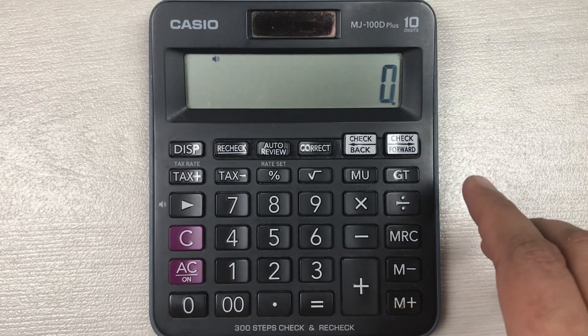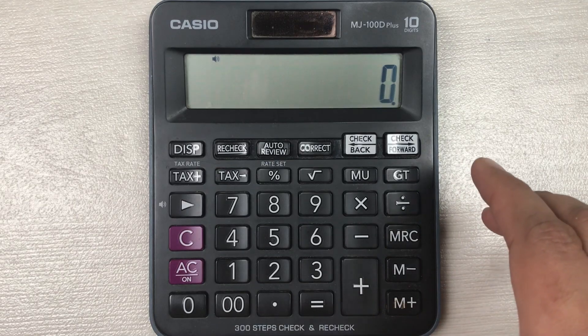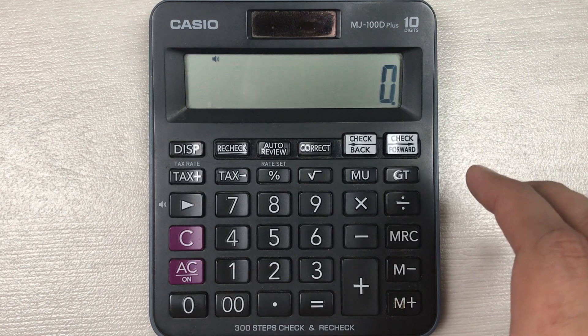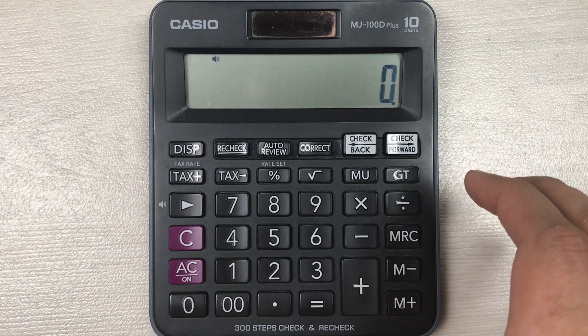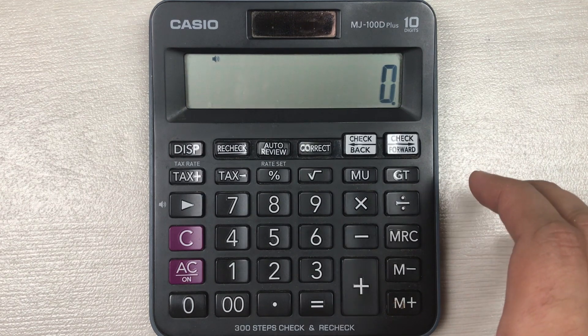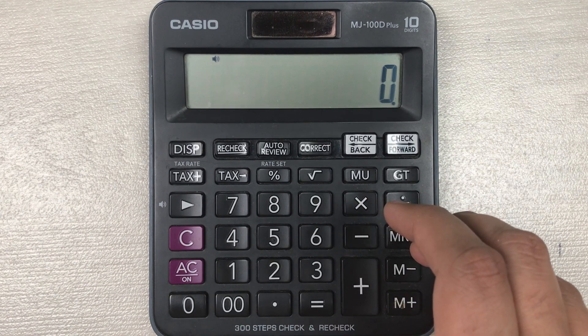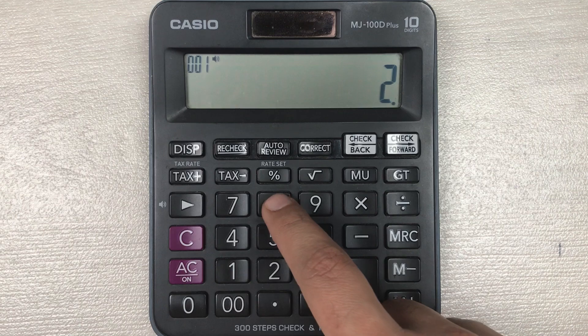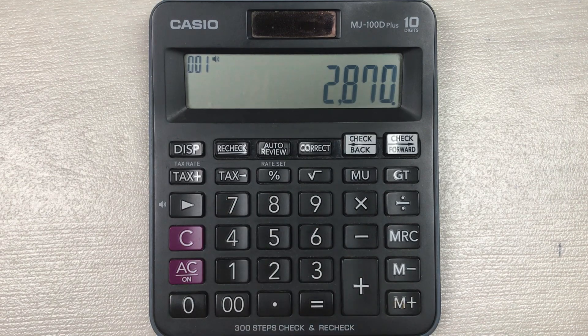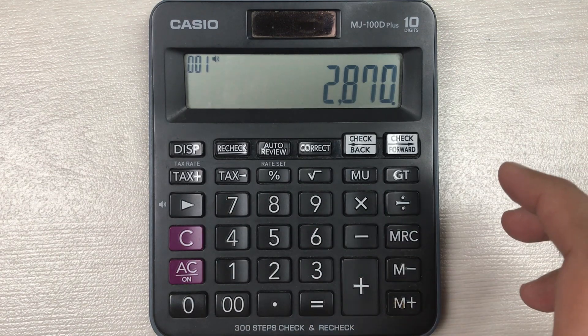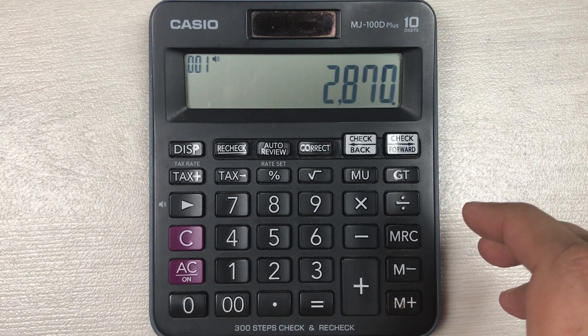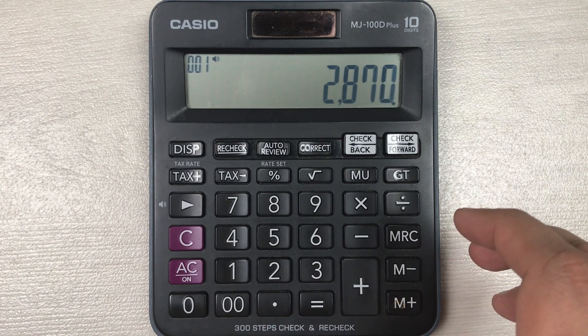Hello guys, I hope you are doing really well. In today's video I'm going to show you how to calculate 40 percent of a price on your calculator. For example, you have an item and the price of that item is 2870, and you want to know how much will be the final price after 40 percent off.